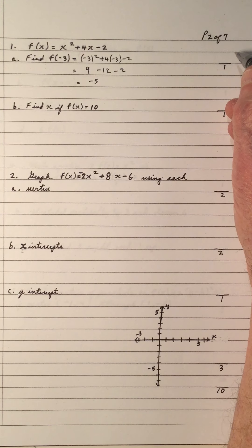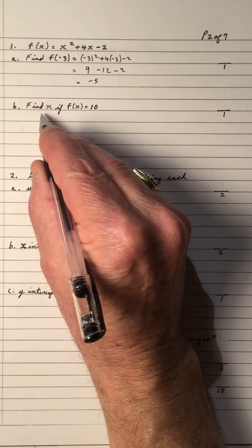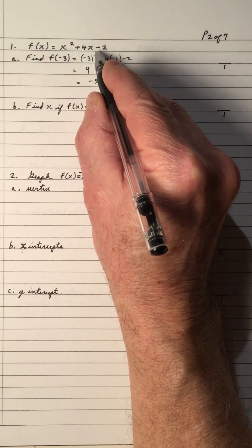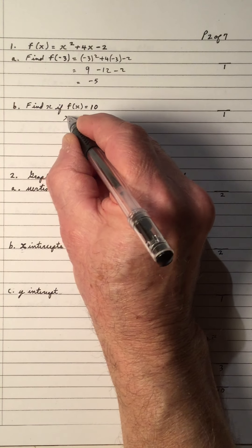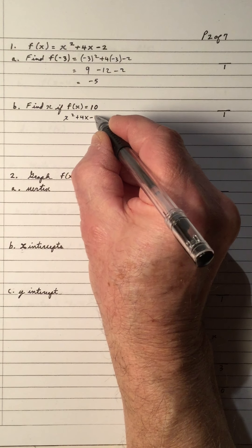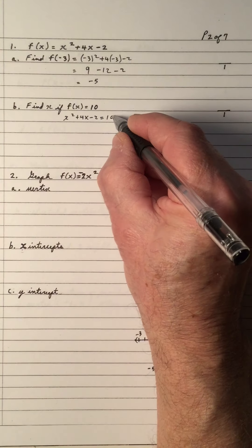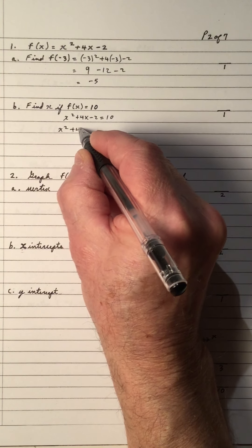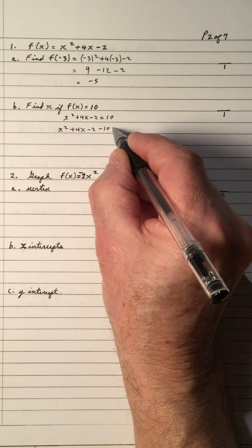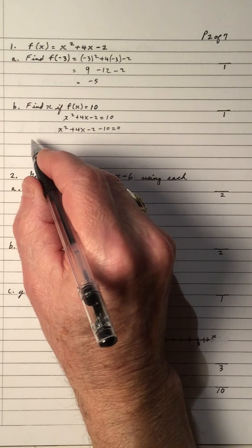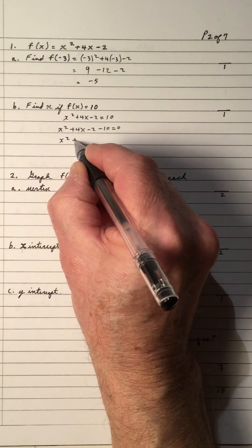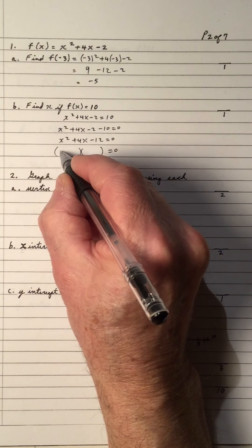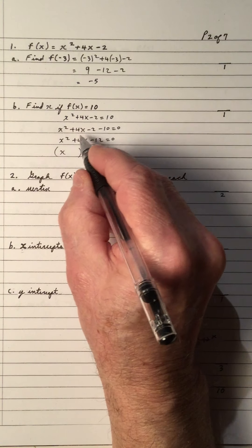Find x if f(x) equals 10. So f(x) equals x squared plus 4x minus 2, therefore x squared plus 4x minus 2 equals 10, because they're both equal to f(x). That means x squared plus 4x minus 2 minus 10 equals 0. Move all terms to the left side and simplify to get x squared plus 4x minus 12 equals 0.